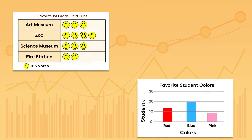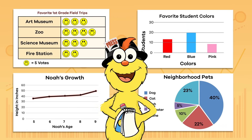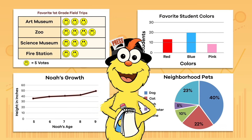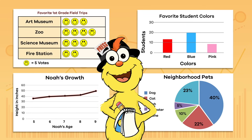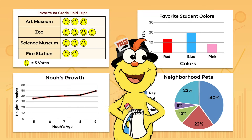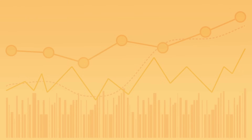Now that you have learned about 4 different types of graphs, which type was easiest for you to figure out? The best way to learn about graphs is to create your own. Begin by asking a simple question. If you could ask one question of kids your age all over the world, what would you most want to know? Now, use that question to make yourself a graph, and then start graphing your findings. Just keep working at it, and you'll be a pro in no time!